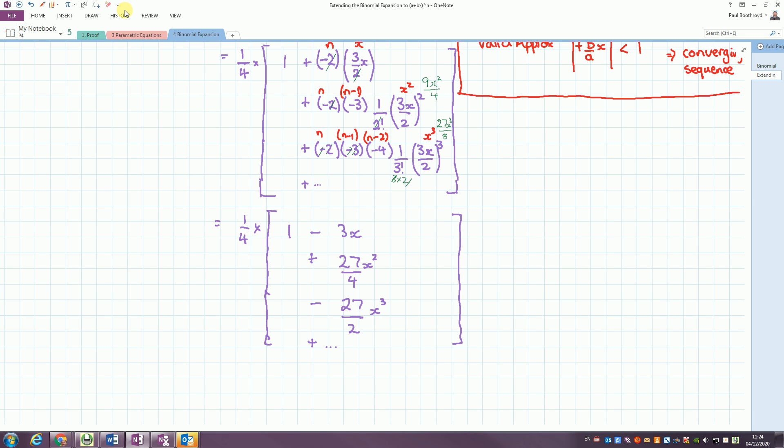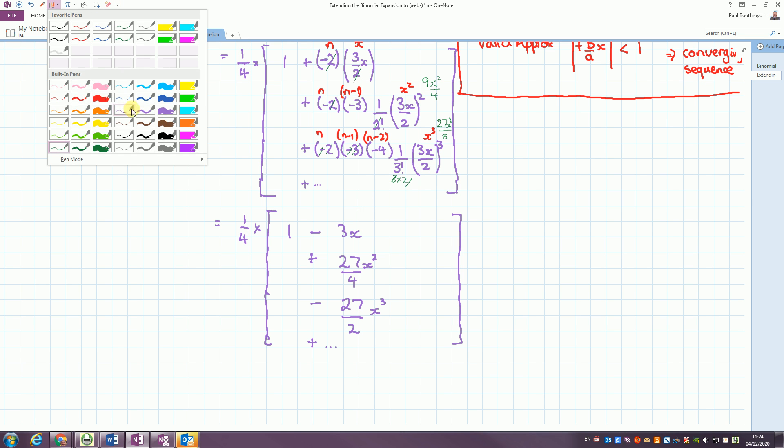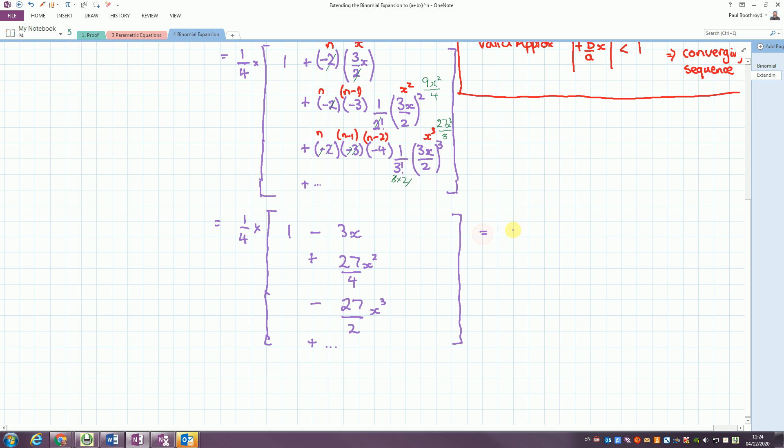And the final part for this fraction, we simplify it all, put everything over a quarter. So we've got a quarter minus 3 quarters x plus 27 over 16x squared minus 27 over 8x cubed. And the expression keeps going.